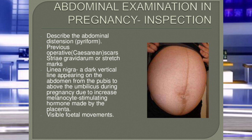Next is striae gravidarum — these are stretch marks you can find on some mothers' abdomen. Next is linea nigra — a black or deep dark line you can see on the abdomen. Sometimes we can also observe visible fetal movements in the abdomen. These are all the points to inspect during antenatal examination.